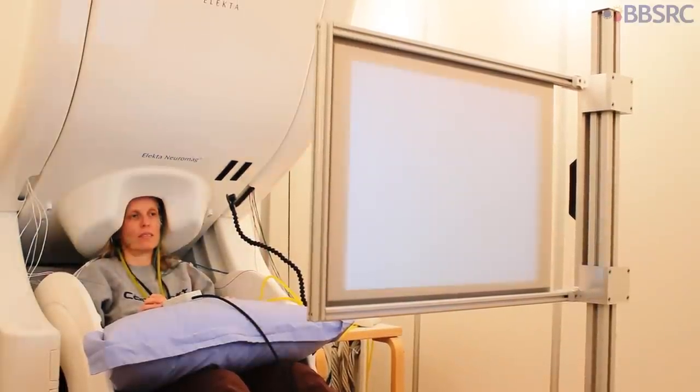But we're not sure whether that's a consequence of changes in the brain's blood supply as we age, or actual changes in neural activity. This is what the MEG scan can tell us. It can separate out true changes in neural activity from changes in the brain's plumbing, if you like.